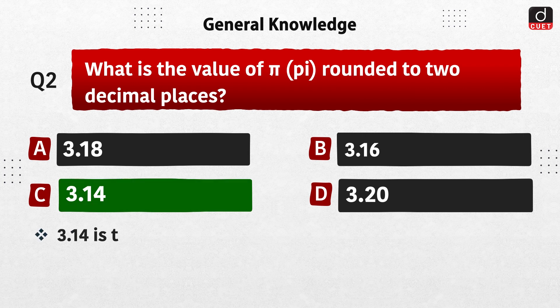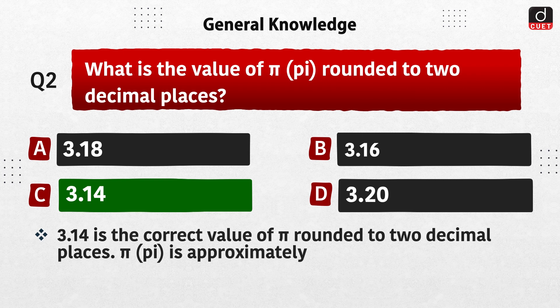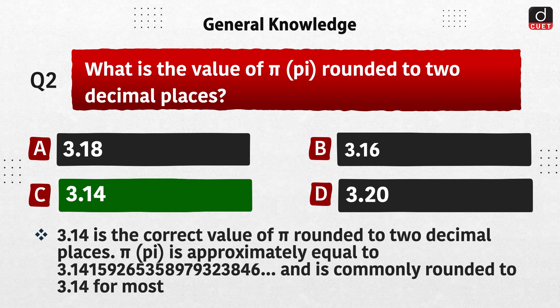3.14 is the correct value of pi rounded to two decimal places. Pi is approximately equal to 3.14159265358979323846 and is commonly rounded to 3.14 for most calculations.